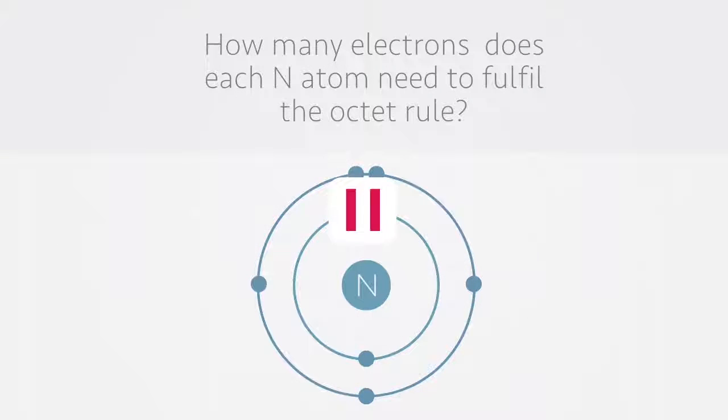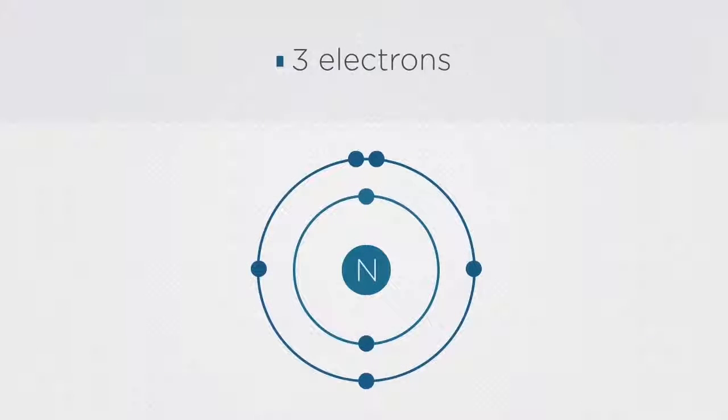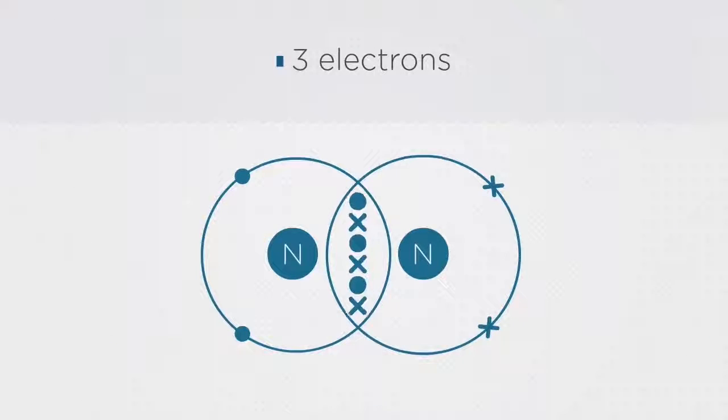If you said that three electrons are available to form a shared pair, you'd be correct. You should see that there are three shared pairs of electrons in the overlap of the shells. This is called a triple bond. You should also notice that this example fulfills the octet rule.